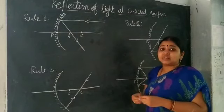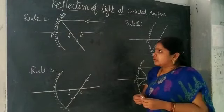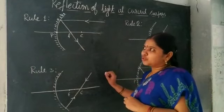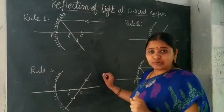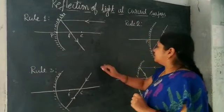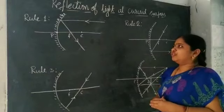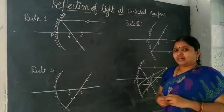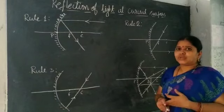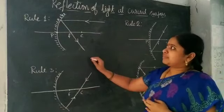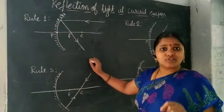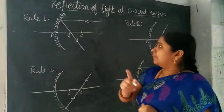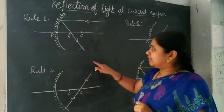These are simple mistakes that may cost us marks, so we have to learn these three rules. Take your book, ruler, and pencil. These ray diagrams have to be drawn with a scale — don't forget to use your ruler while drawing ray diagrams.